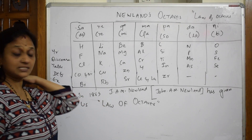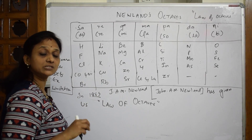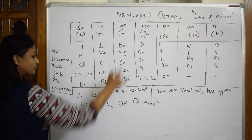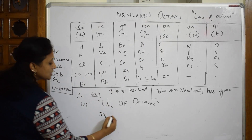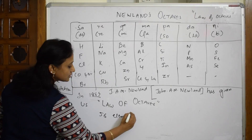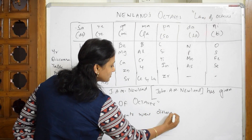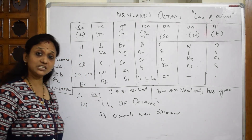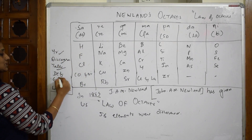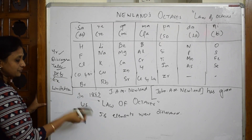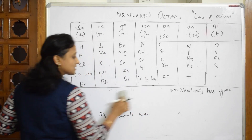In 1865, the number of elements discovered was 56. Newland arranged all 56 elements in a tabular column. That covers the basic introduction. Now I'll write the definition — I'm erasing part of the board to make space.